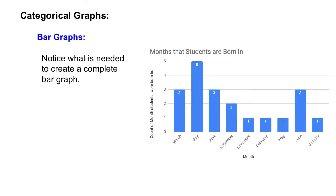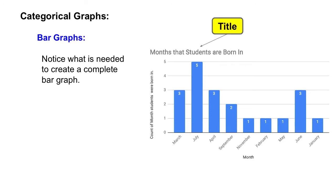Some things that we need in order to complete a bar graph: one of the first things that we need is a title. So we've got this bar graph here — months that students are born in — we've got the title listed.